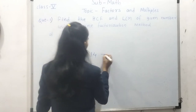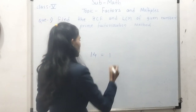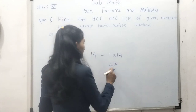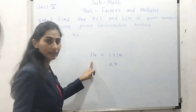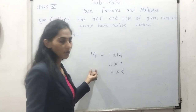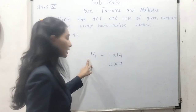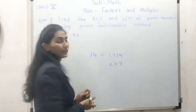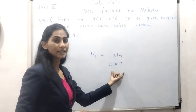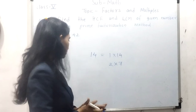Starting from one: if we multiply 1 by 14 we get 14. Is there any number that when multiplied by 2 gives 14? Yes — two sevens are 14. Is there any number multiplied by 3 that gives 14? No. So we can say that 1, 2, 7, and 14 are the factors of 14, because 14 appears in only the 1, 2, and 7 times tables.